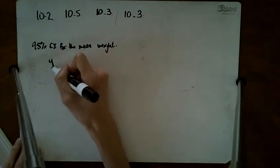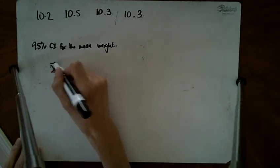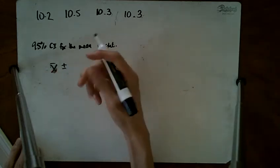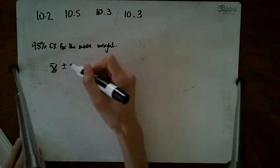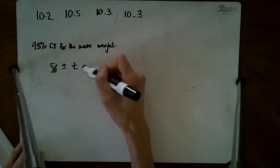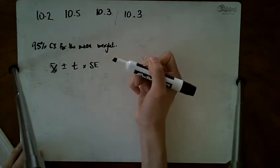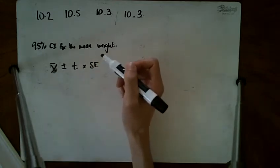The 95% confidence interval puts x̄ in the middle and goes plus or minus. Because we're dealing with means, we use the t distribution: critical t times the standard error.